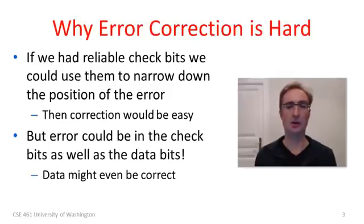Well to get the ball rolling here, let me remind you why error correction is hard. Now if we had reliable check bits that you could send to go with the data bits, everything would be much easier. You could send that reliable information and use them to describe the structure of the message and narrow down where the error was in the data. But of course there can be problems in all of the check bits. In fact the error could be in the check bits as well as the data bits. The data might even be correct. If the error was in the check bits, that would maybe throw us off. We would think there was an error even though we actually wouldn't necessarily care about it.